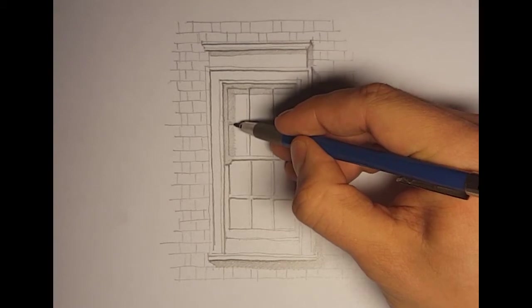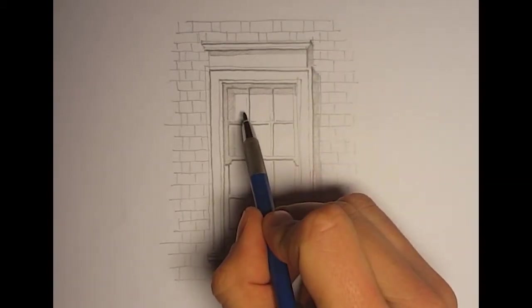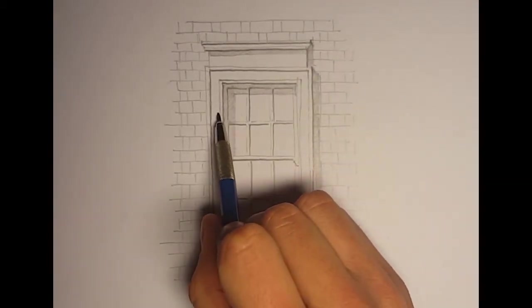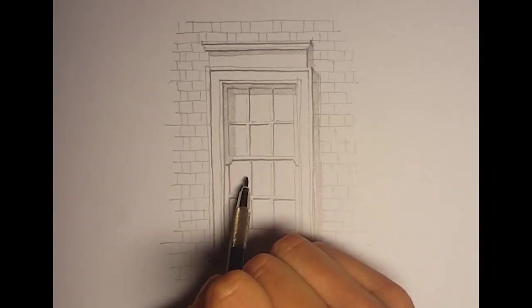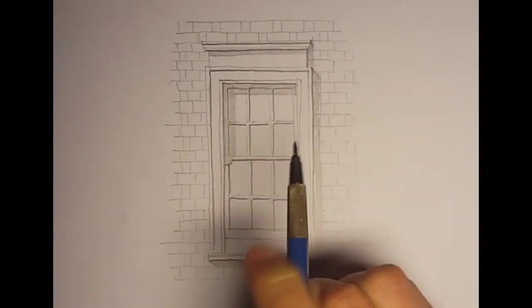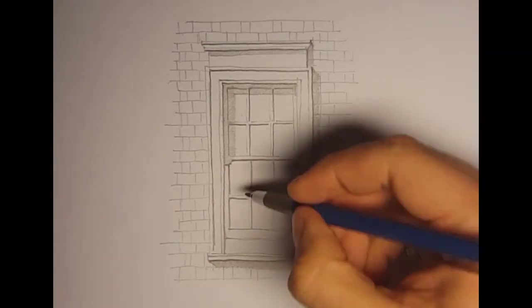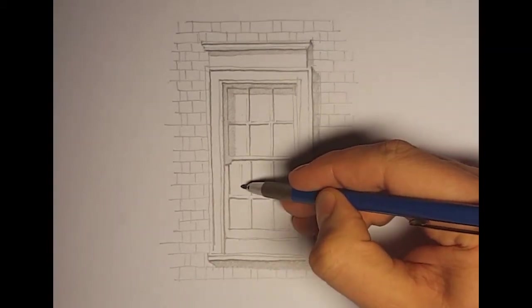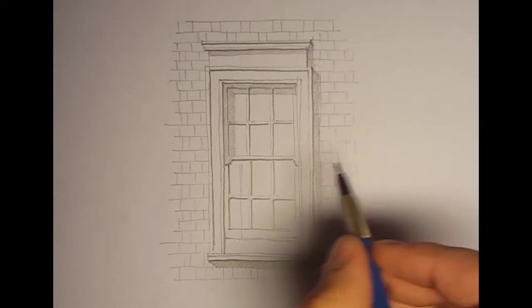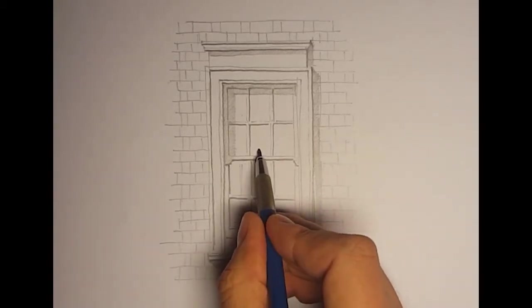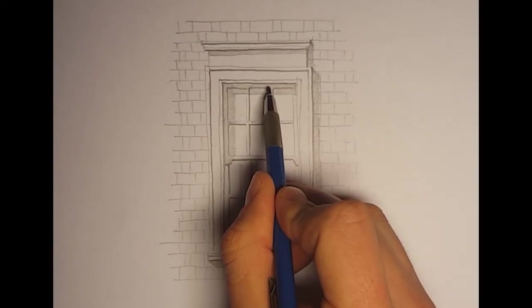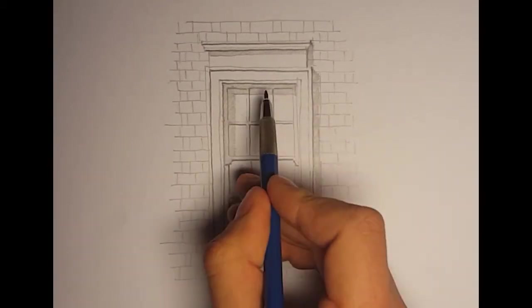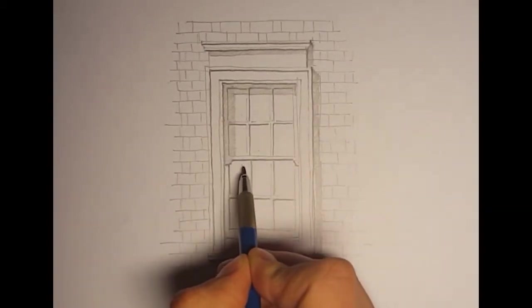Now this shadow, because this window plane is closer to this frame and this is set back behind this one, the shadow here is going to be thicker. But this difference is about the same as this difference, so the shadow here is going to be the same as here.